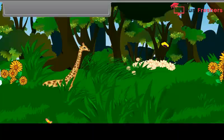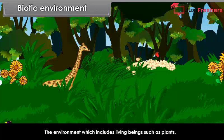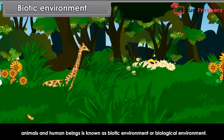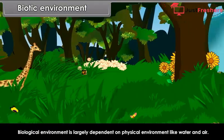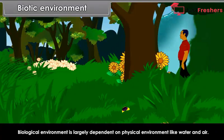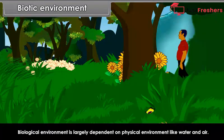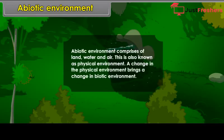Biotic environment: The environment which includes living beings such as plants, animals and human beings is known as biotic environment or biological environment. Biological environment is largely dependent on physical environment like water and air. Abiotic environment comprises of land, water and air, and is also known as physical environment. A change in the physical environment brings a change in biotic environment.